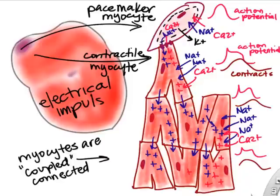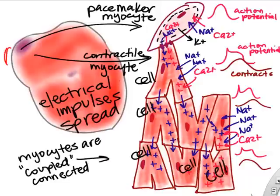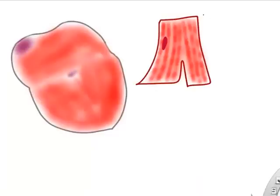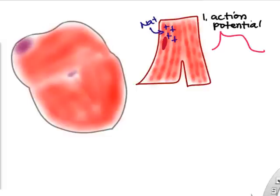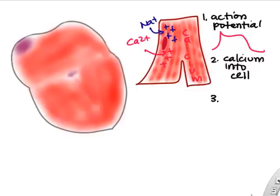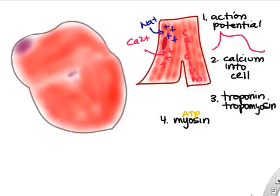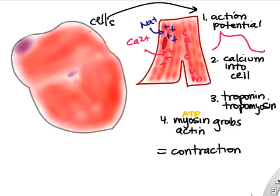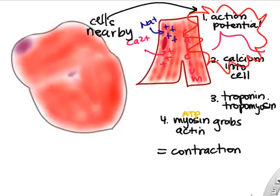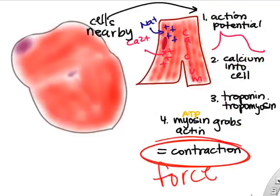Electrical impulses spread throughout the heart from cell to cell, triggering contraction of all cardiac cells. An action potential causes sodium to rush in, then calcium from outside the cell and from the SR. Calcium triggers troponin, troponin moves tropomyosin, which allows myosin — powered by ATP — to grab actin. That is contraction. The action potential triggers calcium, which triggers contraction.